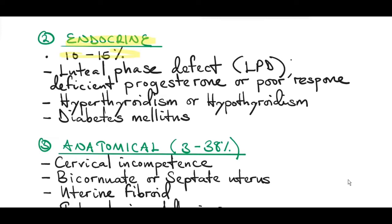Endocrine causes account for 10-15% of all miscarriages, one of them being luteal phase defect (LPD). LPD is when there is insufficient progesterone or poor response of the uterus to progesterone. Remember that progesterone is important because it inhibits contractions of the uterus and helps the uterus to grow. Other endocrine disorders are hypothyroidism and hyperthyroidism, and diabetes mellitus if not controlled properly can also cause miscarriages.